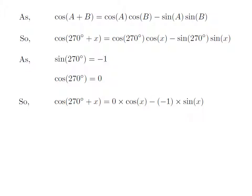Let us replace the value of sine of 270 degrees and cosine of 270 degrees in the above expression of cosine of 270 degrees plus x. So, we got cosine of 270 degrees plus x is equal to 0 into cosine of x minus minus 1 into sine of x.